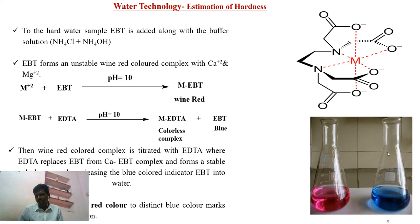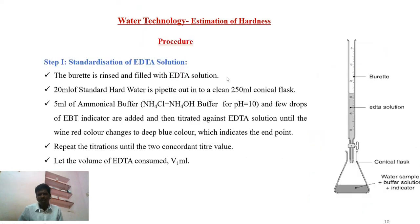The colour change is shown here: the metal-EBT complex transitions to metal-EDTA complex with free EBT. The metal-EDTA complex is colourless, and the free EBT is blue in colour. So after the EBT comes out from the metal-EBT complex, it shows its original blue colour. Now we have to discuss the procedure — how to do this.